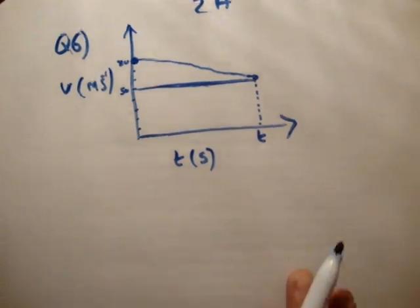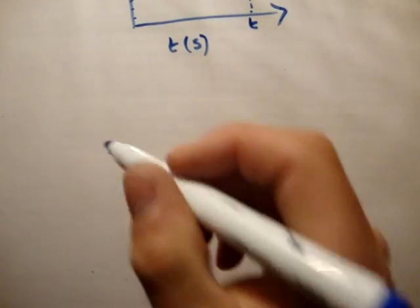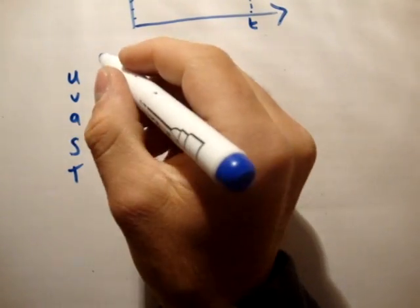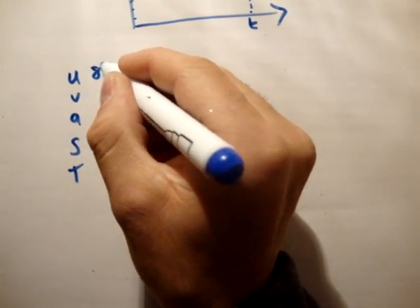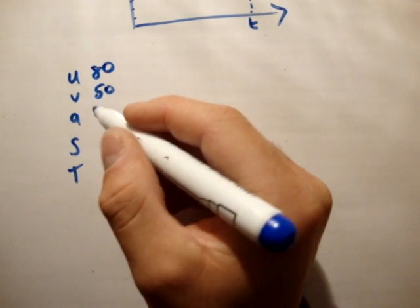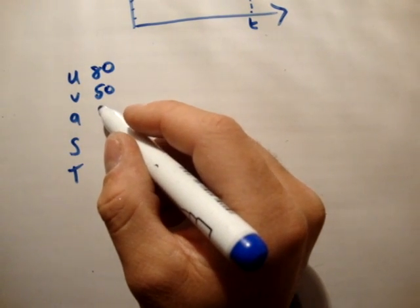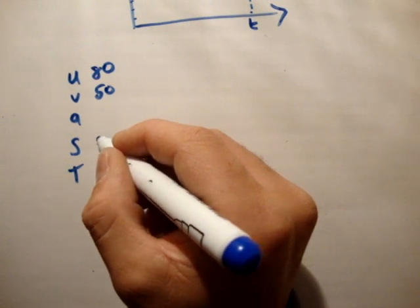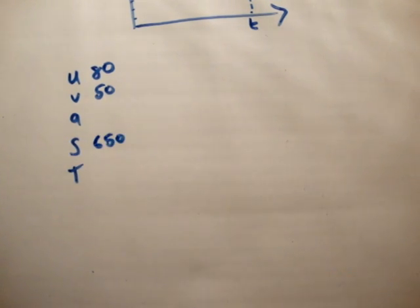So what we're going to do is use our uvast formula. So we'll say u, v, a, s, and t. So u is equal to 80, v is equal to 50, a is equal to, well that's what we're looking for, and the distance is equal to 650, and we don't know what the time is.